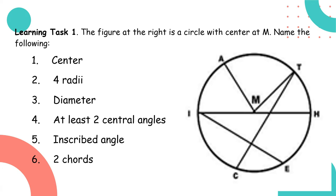So from this learning task, let's look at the figure on the right. So, a circle with center M. There is our M. Name the following. The center is of course center M or point M. For radii, let me give you one: line segment AM. You can continue with the other three. Diameter - we have one diameter. So our diameter is line segment IH.